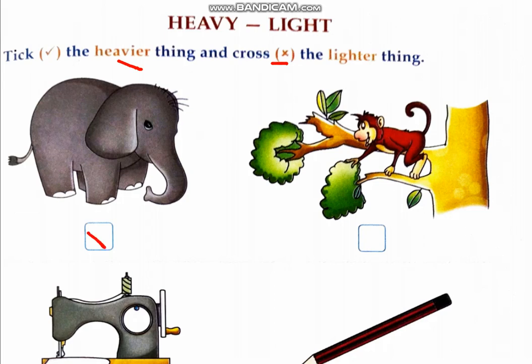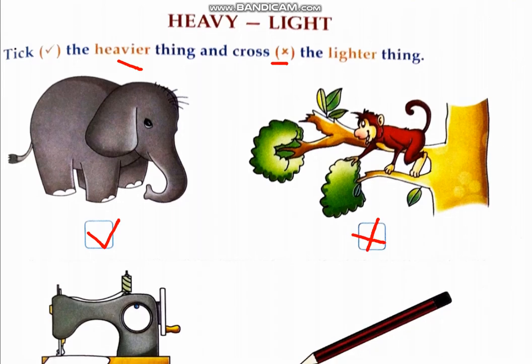Elephant kya hai? Heavy hai, then tick. Monkey is light, so cross.